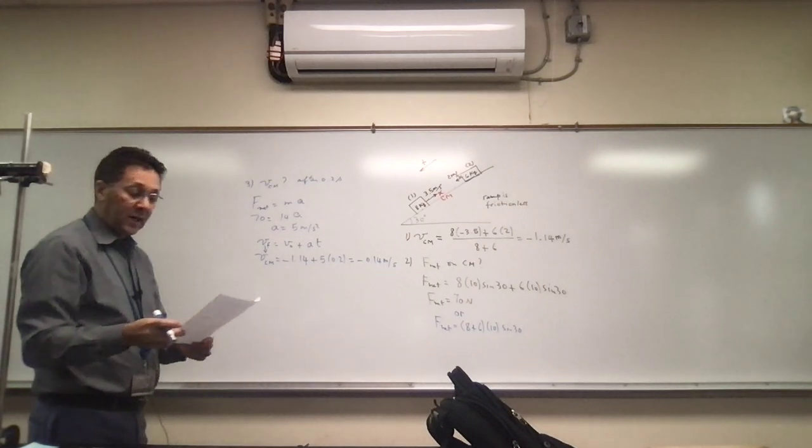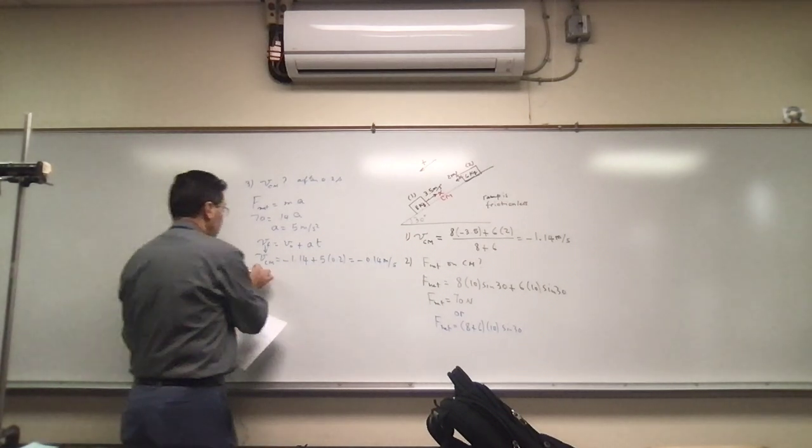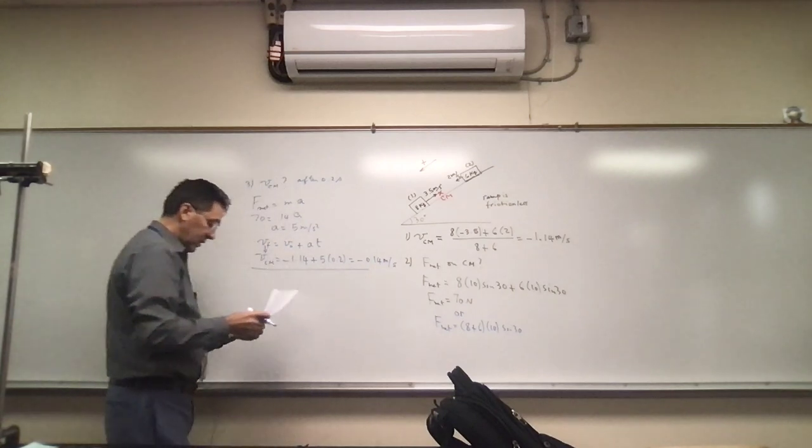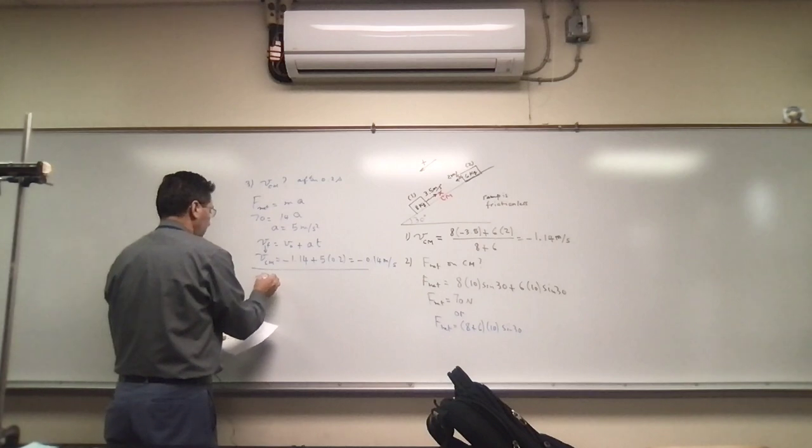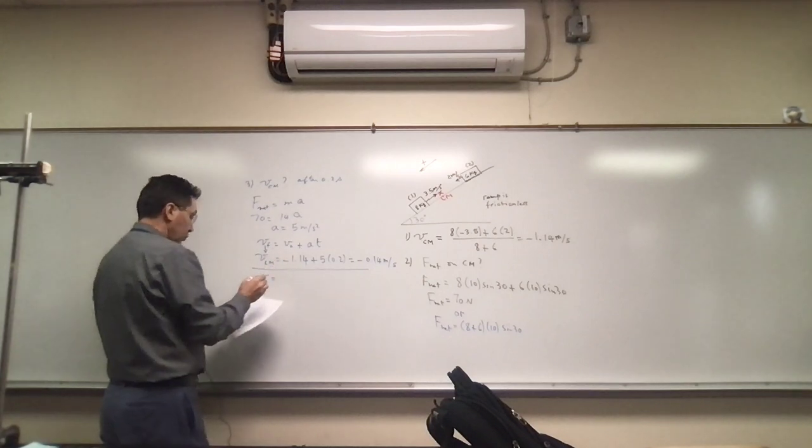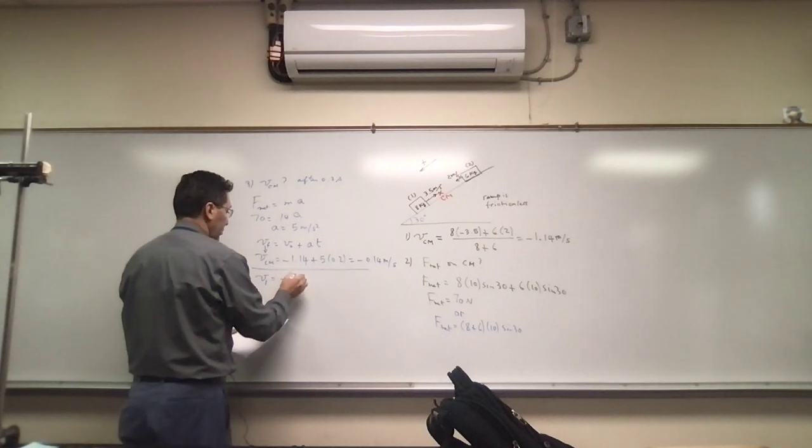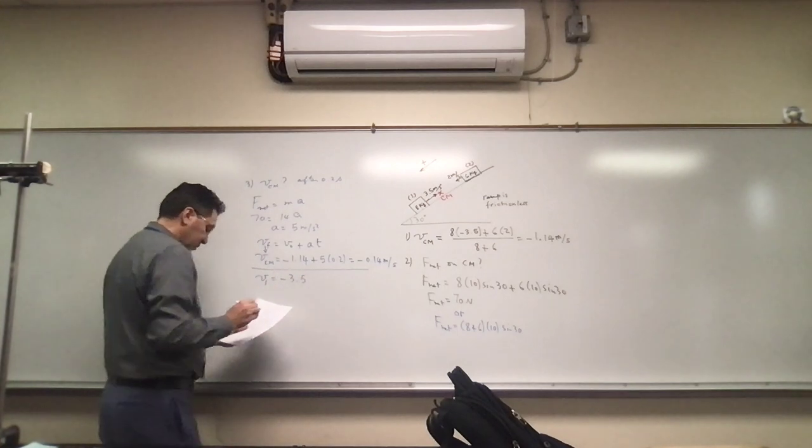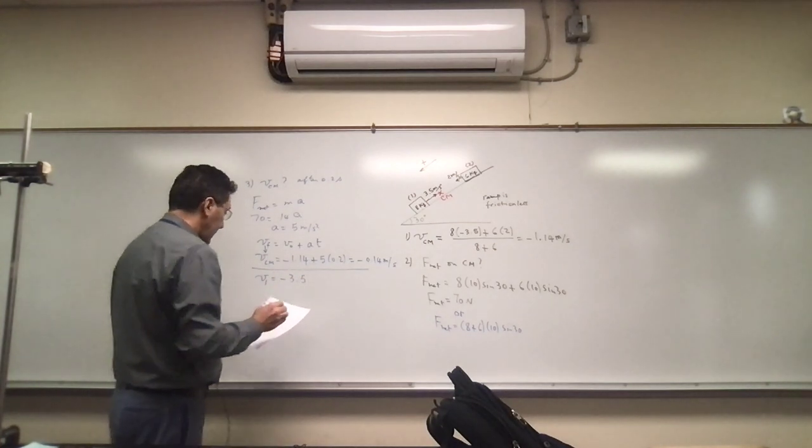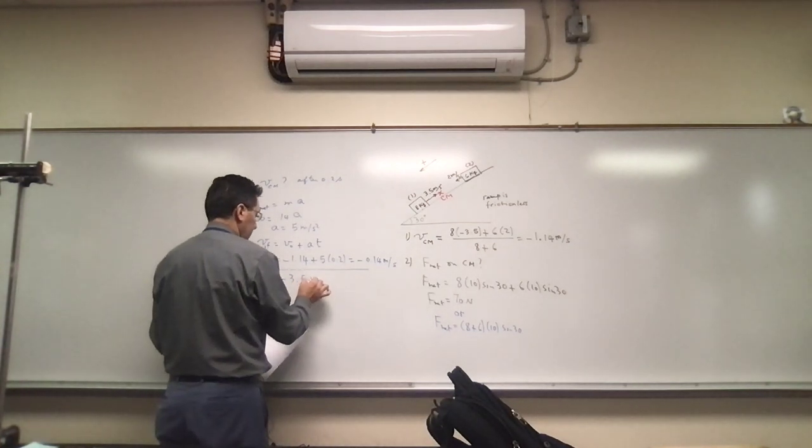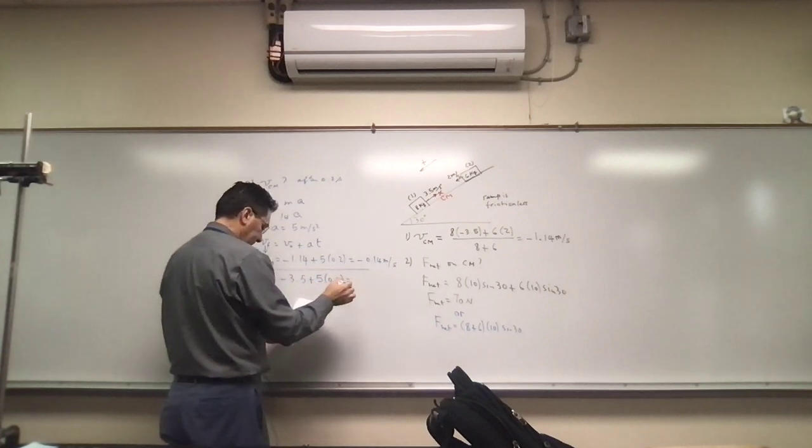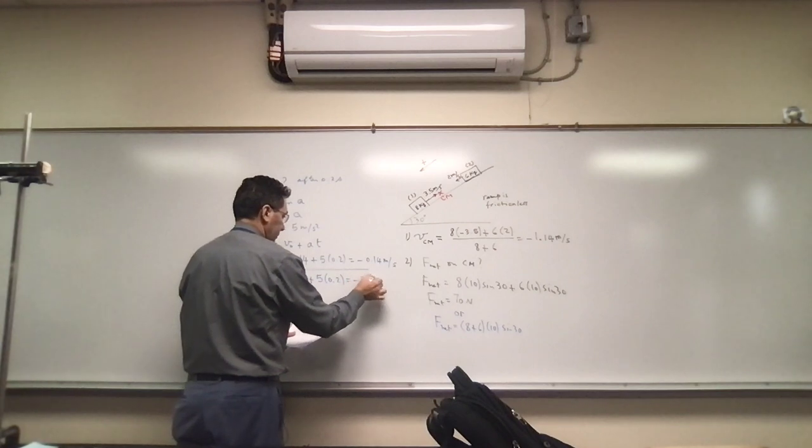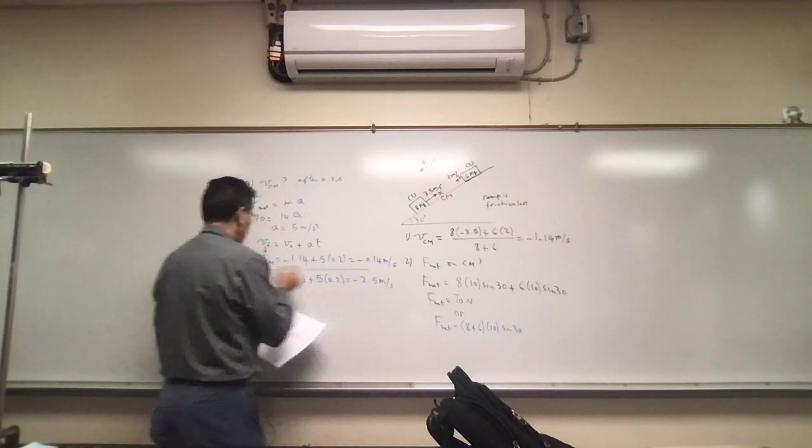The other approach is to find the velocity of each object. So let's say we do the velocity of object 1 after 0.2 seconds. Initially it was going at negative 3.5 meters per second, and there is an acceleration on it of 5 for 0.2 seconds, so this is going to be negative 2.5.